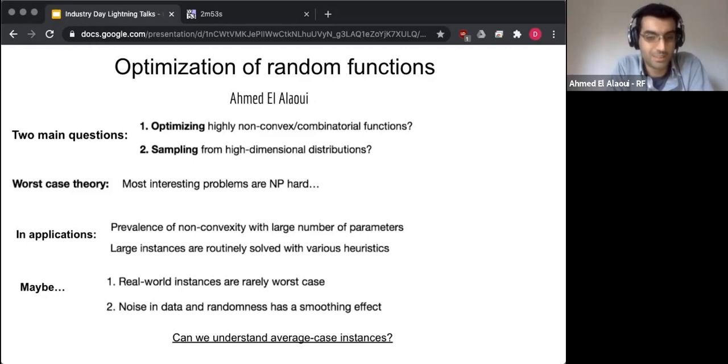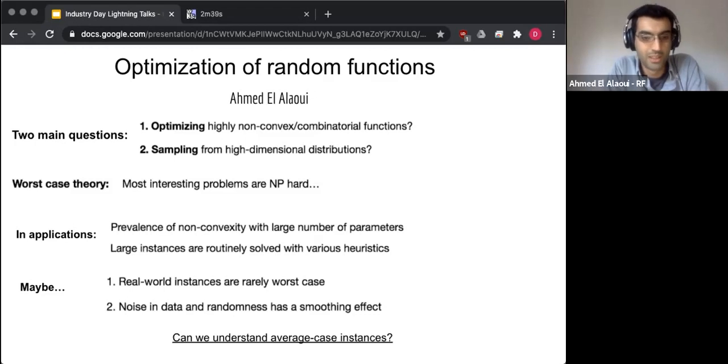And the next possible explanation is that noise in the data and randomness have a smoothing effect that just smooth out the edges of these hard problems and make them nice. So the main high level motivation here is to understand average case instances and how hard they are. So a very simplistic model is to consider random functions.